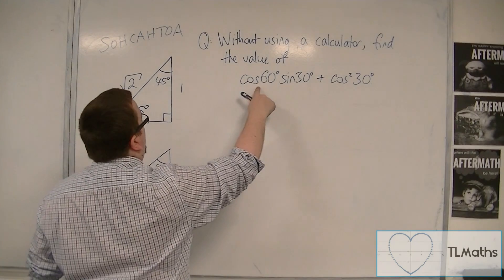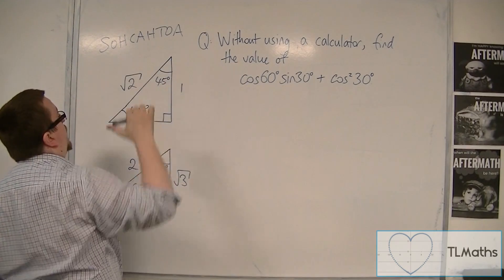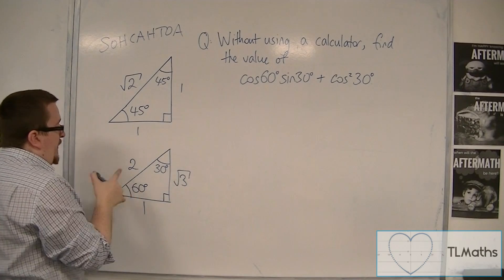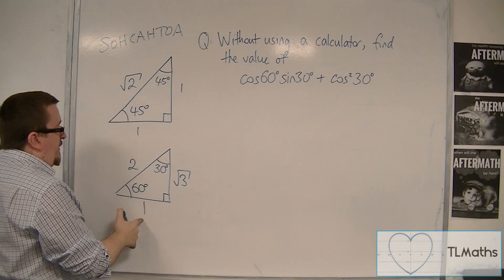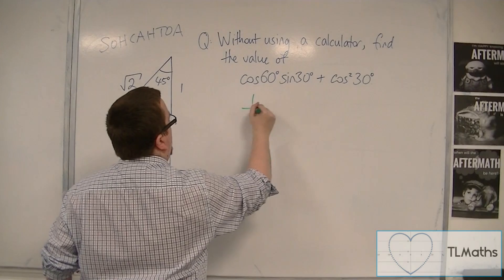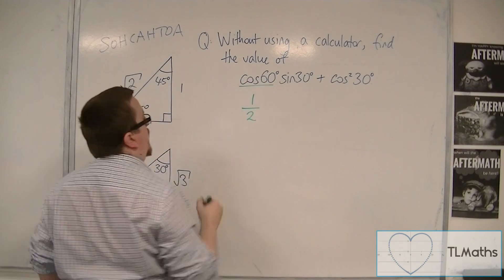So cos of 60, cosine is adjacent over hypotenuse. There's the 60, so adjacent over hypotenuse, so that's one half. So cos of 60 is one half.